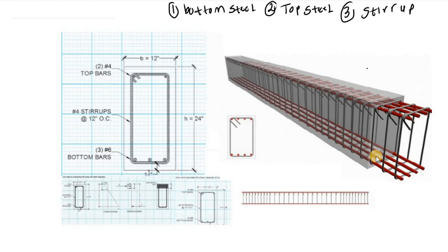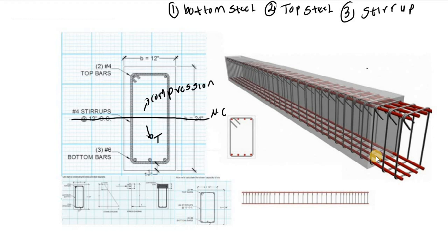We know that the neutral axis of a beam is located somewhere in the middle — this is what keeps the beam static. Above the neutral axis, we have the compression zone. Below the neutral axis, we have the tension zone.